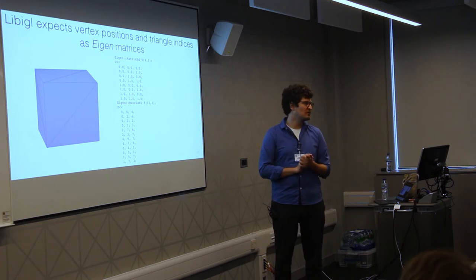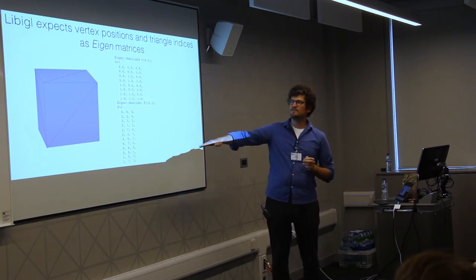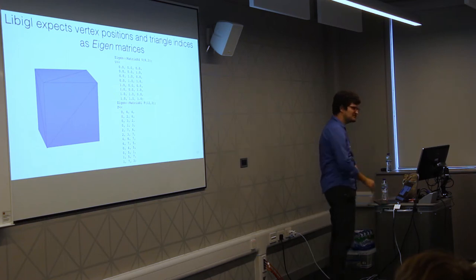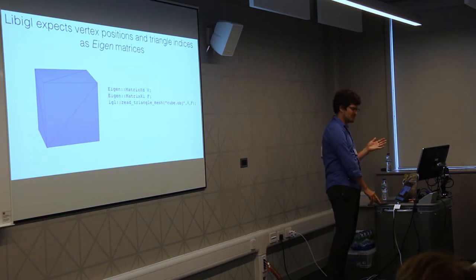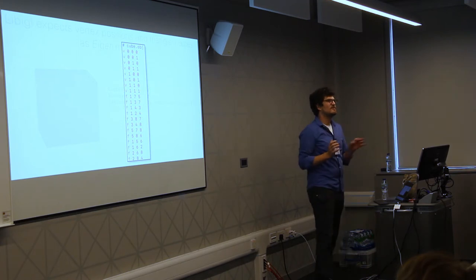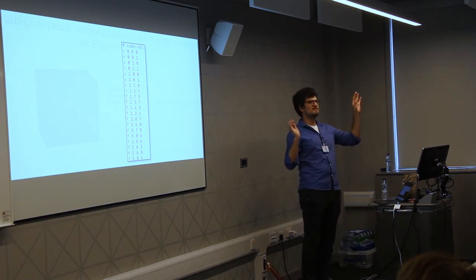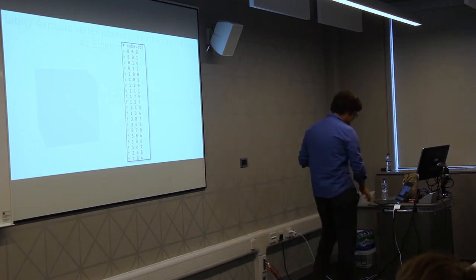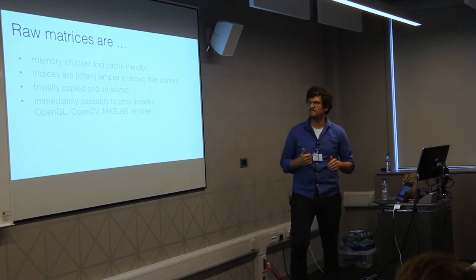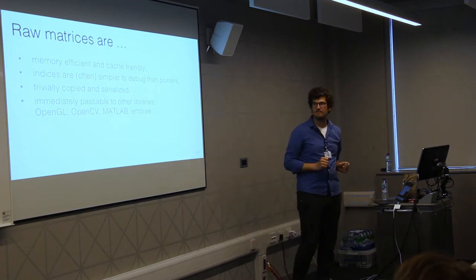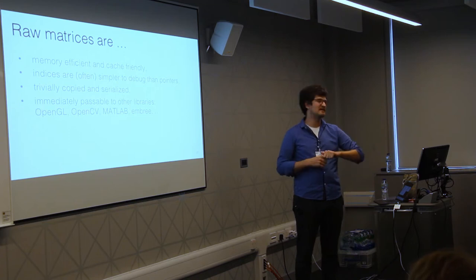Here are the coordinates for all the corners of a cube and the indices for all the triangle faces: 12 faces, two triangles per side, and eight vertices. This should look familiar if you've seen triangle mesh file formats like OBJ. This gives us a lot of flexibility — we place no requirements on our triangle mesh other than it stores triangles with real coordinate vertices; there's no manifoldness requirement.